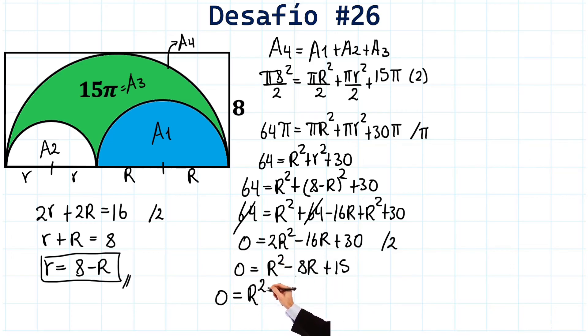We have R squared here. And tell me if we can write this minus 8R as minus 3R and minus 5R. Of course. Because if we add these two, it gives us this here.